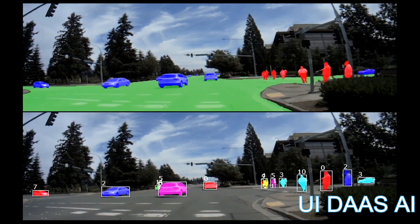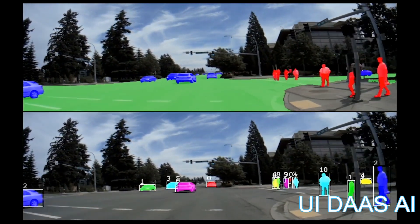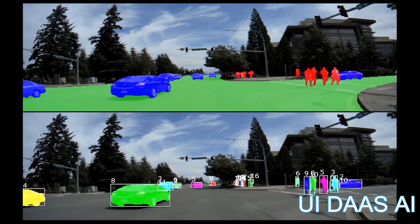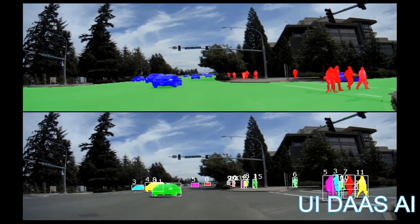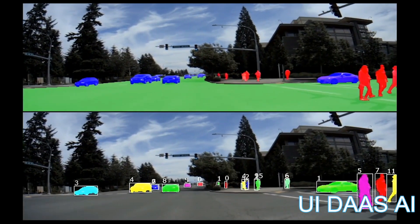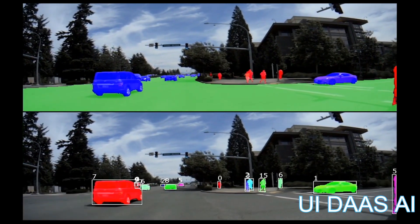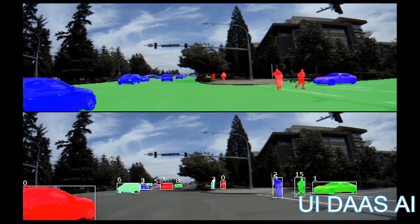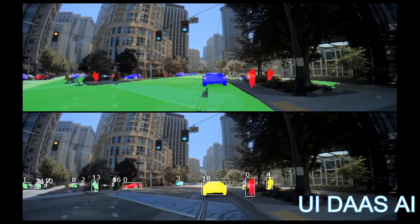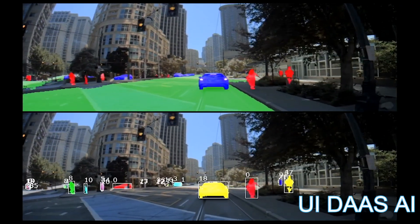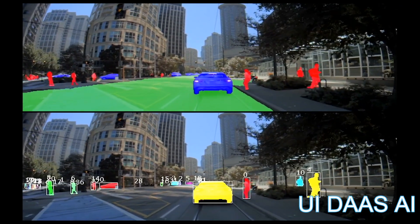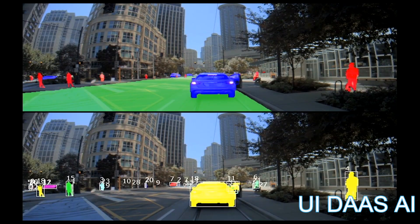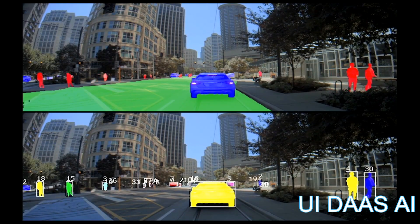In the top video, we see pixel-level shape segmentation results for different object classes, with vehicles in blue, pedestrians in red, and drivable space in green. And in the bottom video, we see segmentation of these object classes into individual instances, as shown by their unique object IDs.